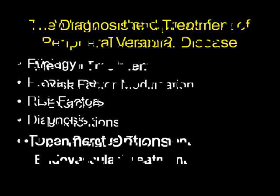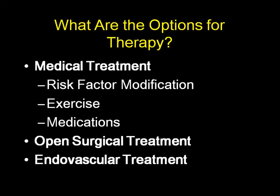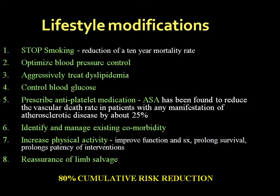Coming to treatment options: medical treatment is the foundation. Risk factor modification includes addressing smoking — the biggest one — as well as hypertension, hyperlipidemia, diabetes, aspirin and anti-platelet agents, and comorbidities. Increased physical activity is key: a minimum of 30 to 40 minutes, three times a week of ambulation. It is not a leisure walk — you have to go a certain distance.